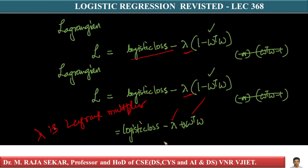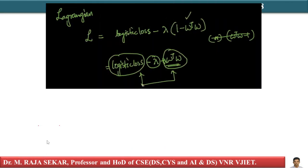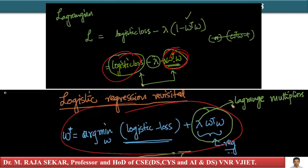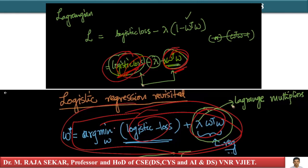Here lambda is the Lagrange multiplier. Looking at these two terms — the logistic loss term and the lambda times w-transpose-w term — they are exactly the same as what we write in our actual optimization problem: w star equals argmin over w of logistic loss plus lambda times w-transpose-w. Here lambda is the Lagrange multiplier.